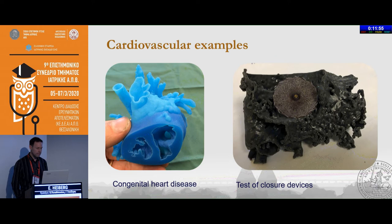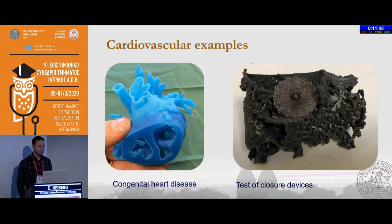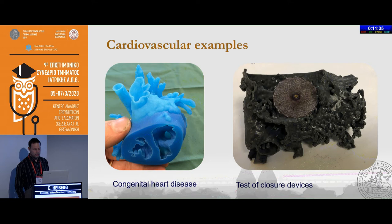Cardiovascular examples: the main application is typically congenital heart disease. Lund is one of the two centers in Sweden where we do congenital heart interventions. This was a case with a complicated double outlet right ventricle. We also print models for testing closure devices for the atrial appendix.